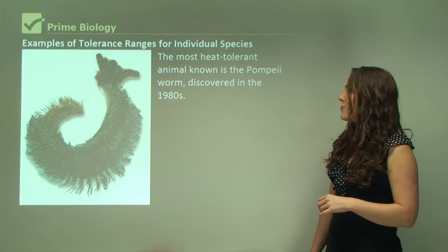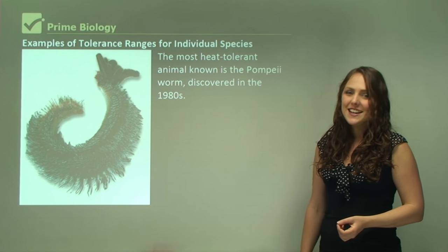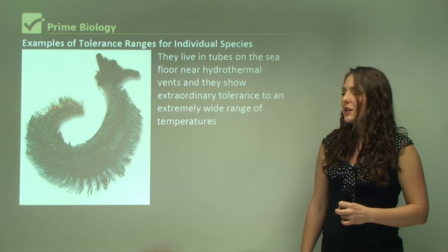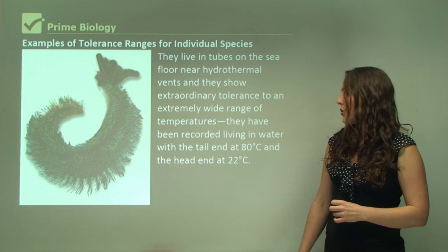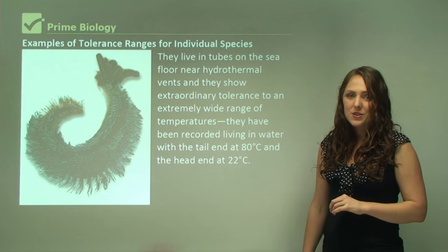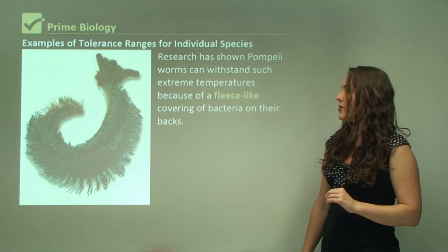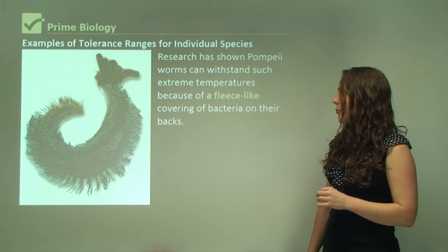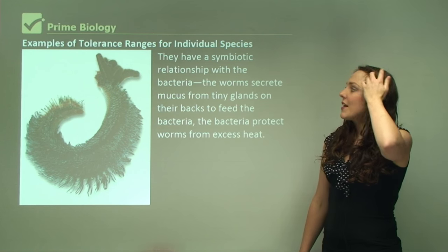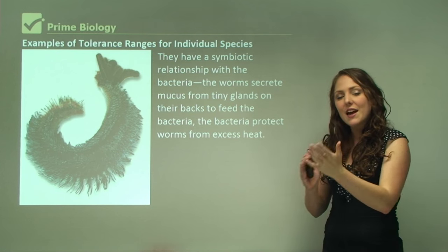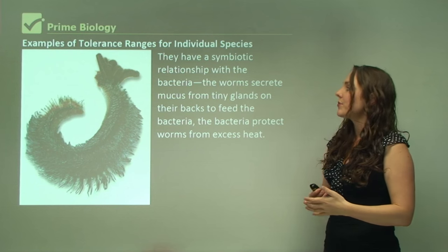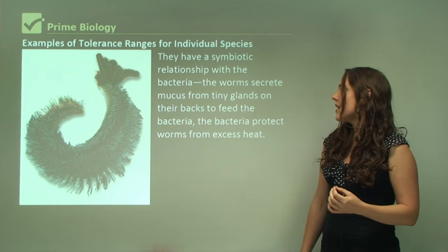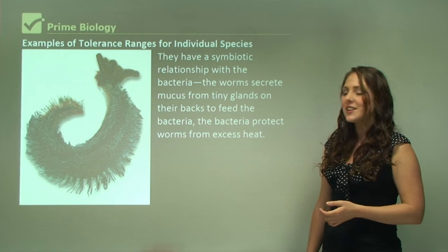The most heat-tolerant animal known, the Pompeii worm, was discovered in the 1980s. They live in tubes on the sea floor near hydrothermal vents and show extraordinary tolerance to an extremely wide range of temperatures — recorded living with their tail end at 80°C and their head end at 22°C. Research has shown that Pompeii worms can withstand such extreme temperatures because of a fleece-like covering of bacteria on their backs. They have a symbiotic relationship with the bacteria, meaning both benefit: the worms secrete mucus from tiny glands on their backs to feed the bacteria, and the bacteria protect the worm from excess heat.